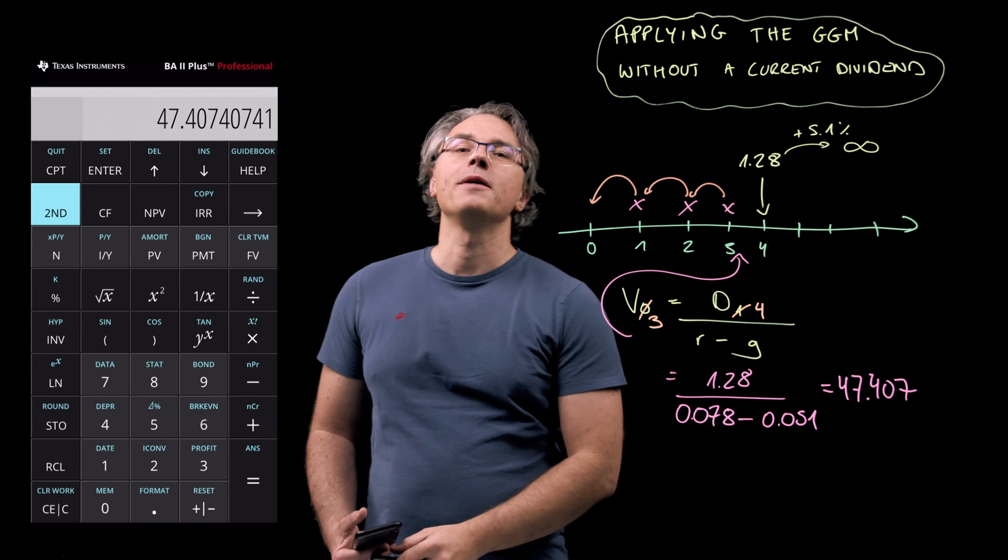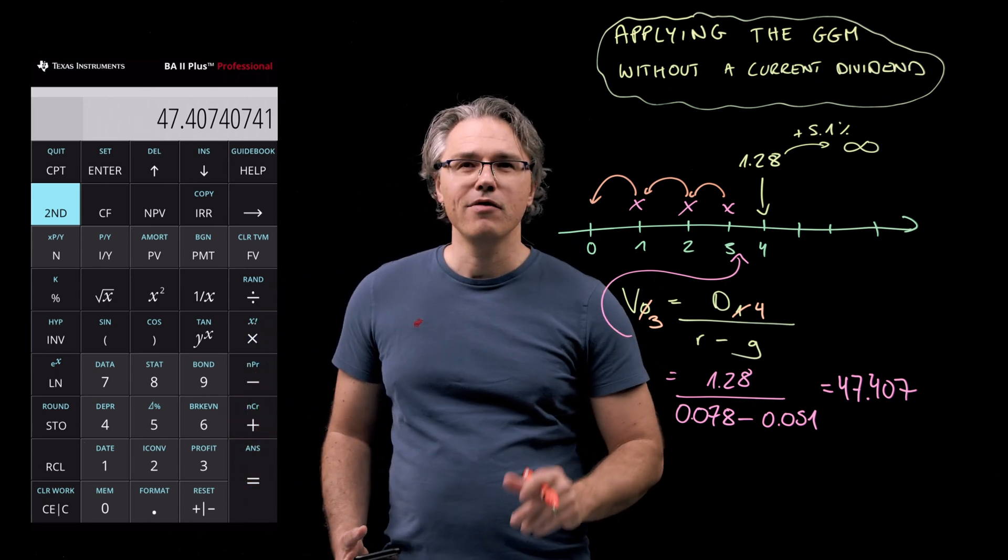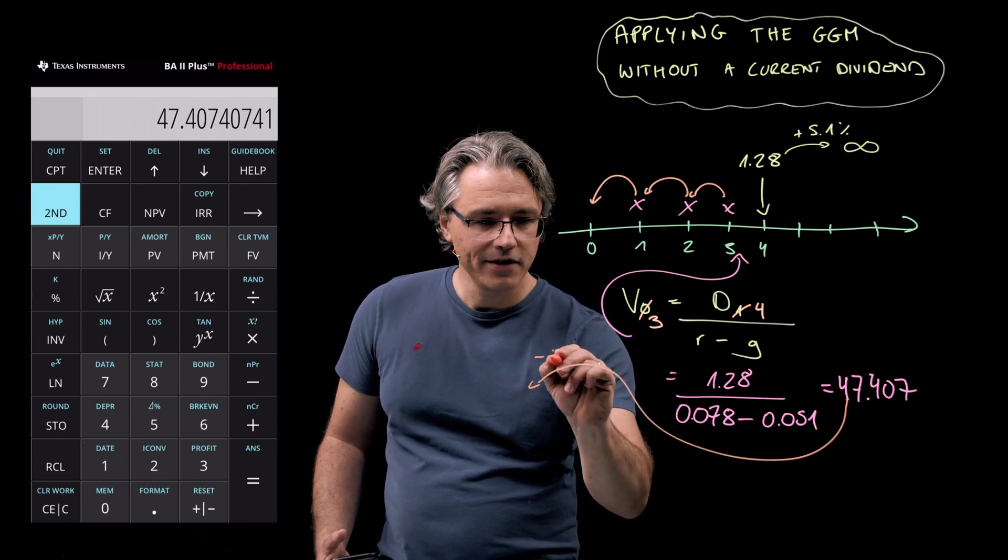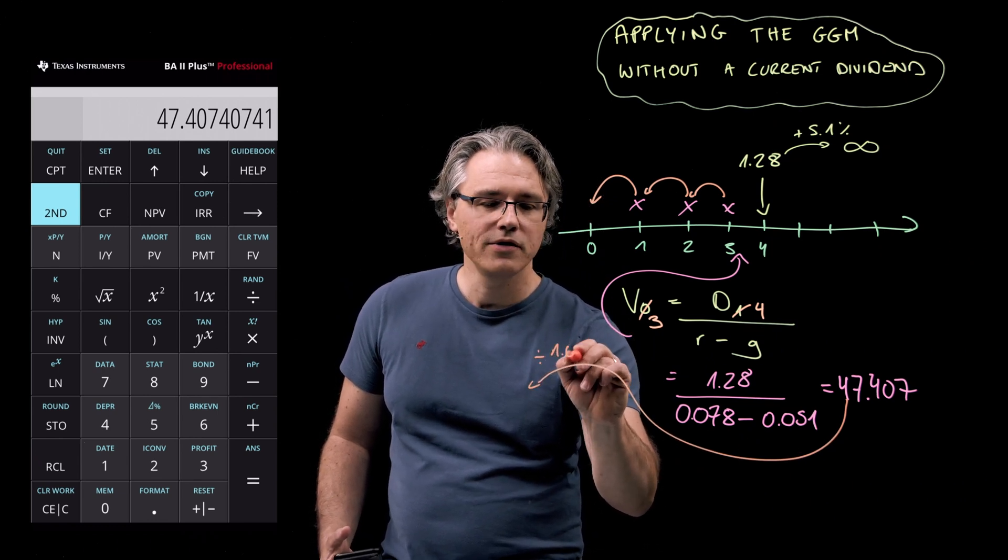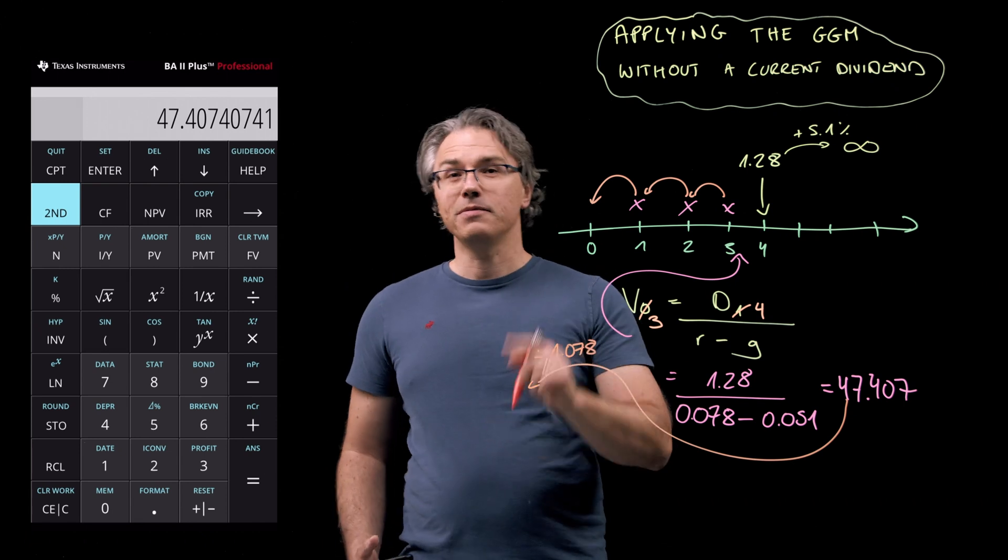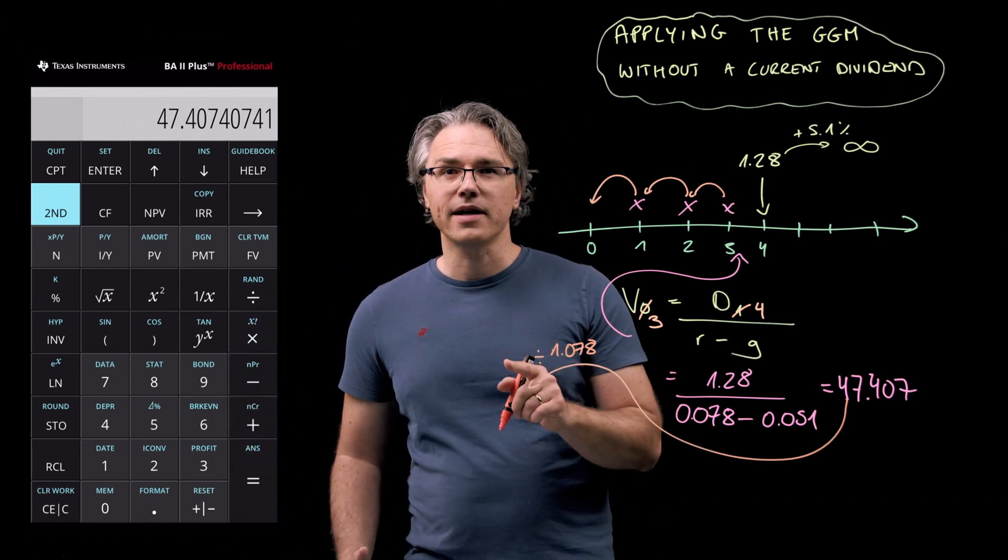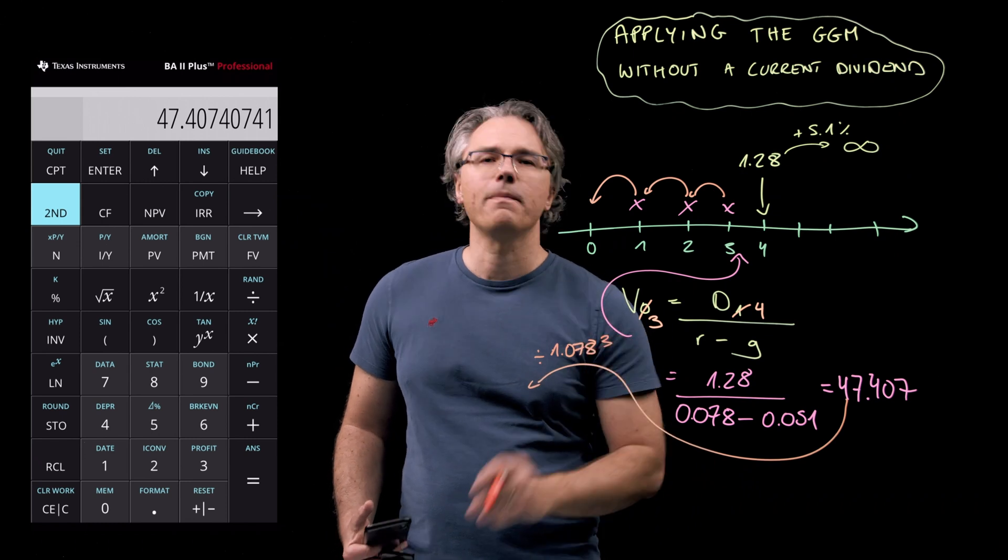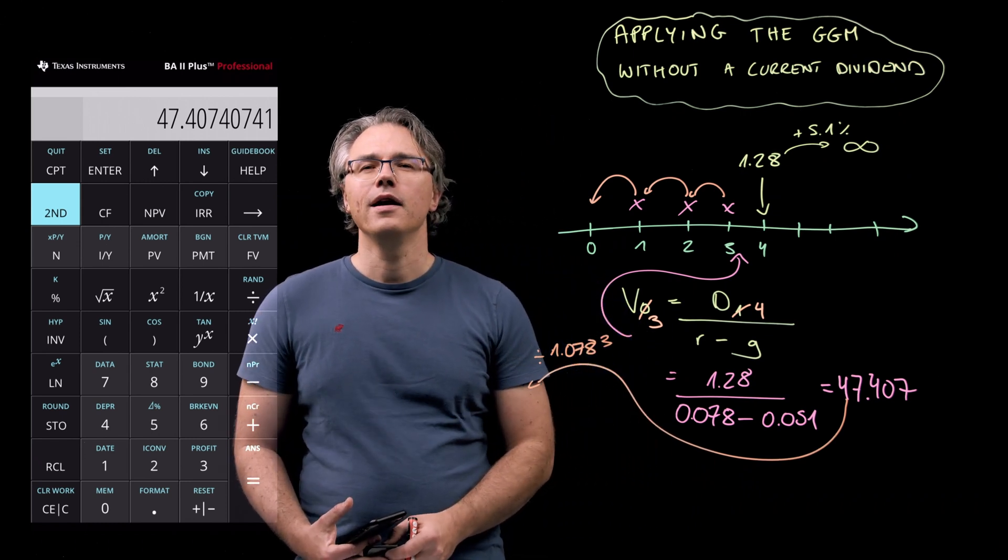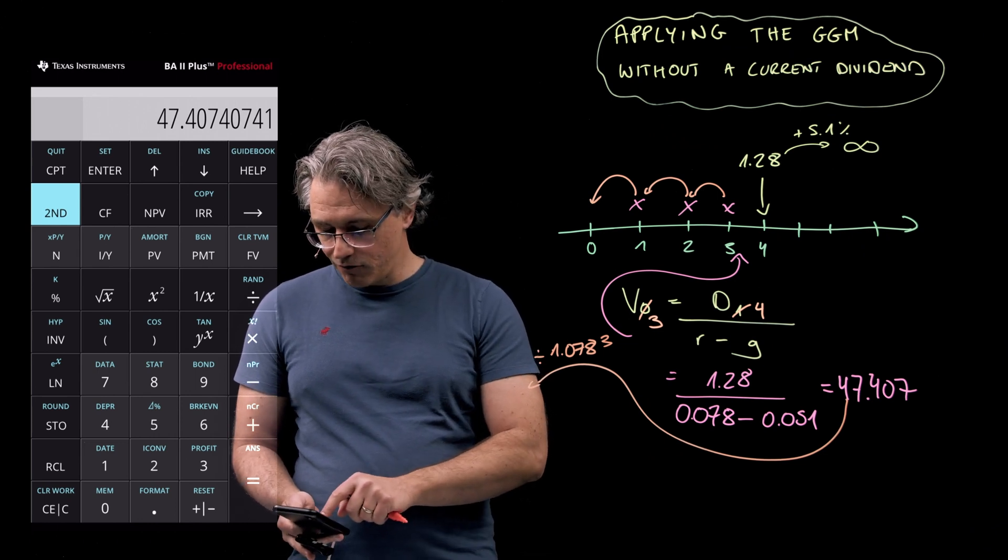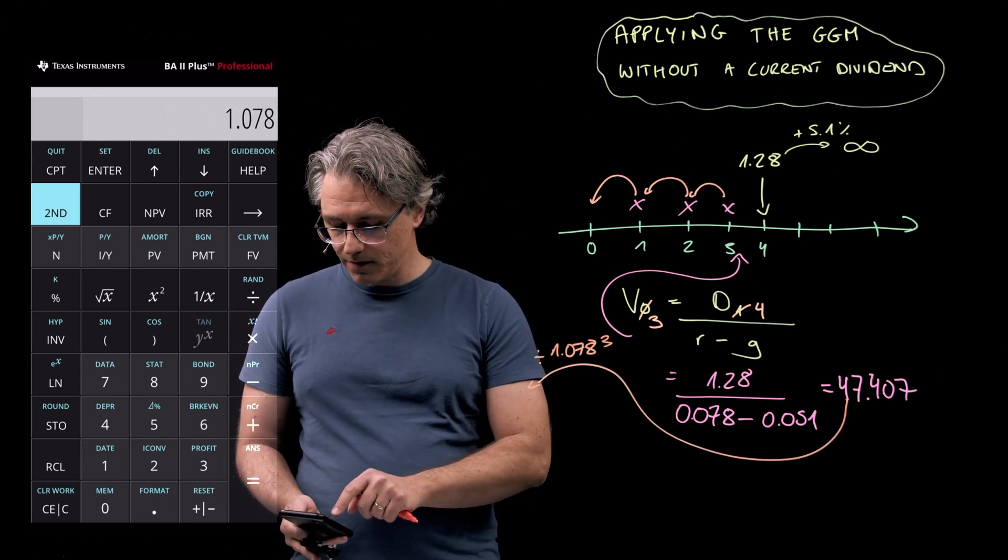Anyway, to obtain V0 we need to take this result and divide it by 1.078—please note that we're using the required rate of return to perform the discounting—raised to the power of 3, which produces, let's check, divide by 1.078 to the power of 3.